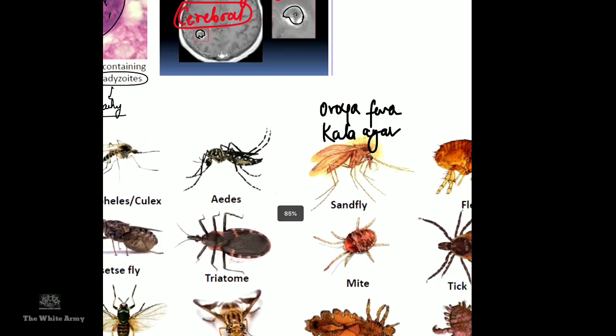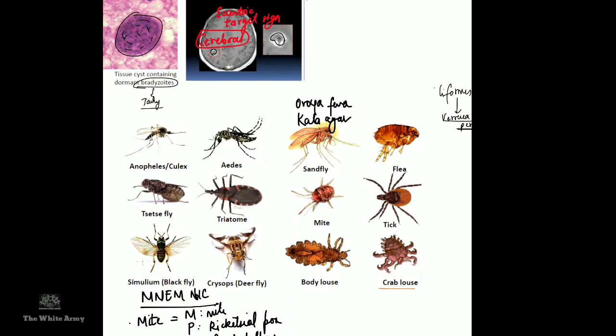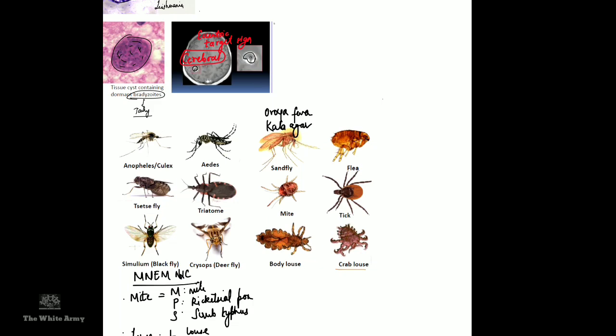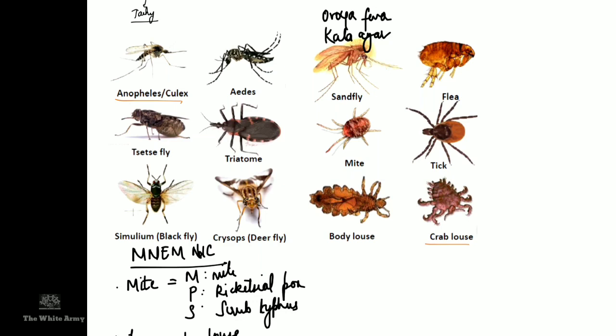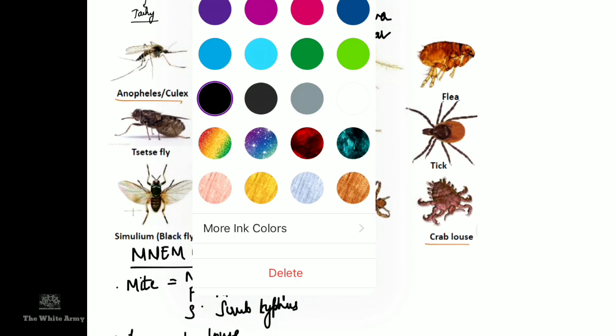Let us revise all vectors with images. Culex, Aedes (for dengue), Anopheles (causes malaria), sandfly/Phlebotomus (causes kala-azar/visceral leishmaniasis). Phlebotomus also causes Oroya fever, caused by Bartonella bacilliformis, also called Carrion's disease — named after Daniel Carrión who died of it.